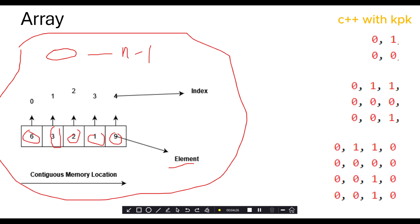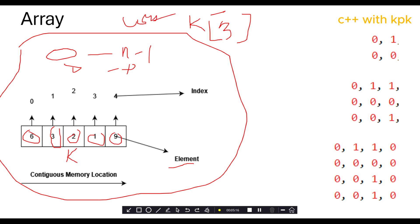So n minus one — n being the number of elements, the size of the array. This is an array of size five, so the index goes from zero to four. The first element in the block can be accessed using index zero. So if you want to access element one in this array named 'key', you use index three — key[3]. When I say 'cout key[3]', I'm going to get the value one.